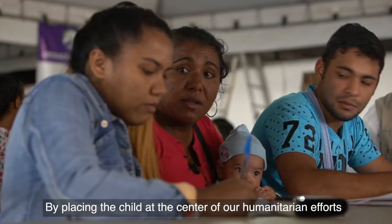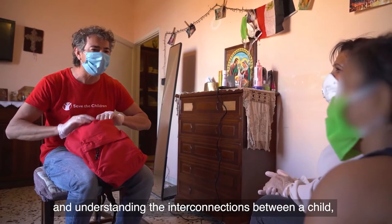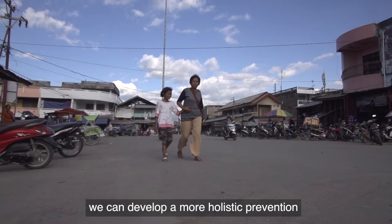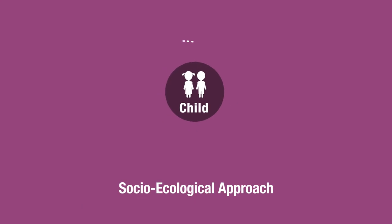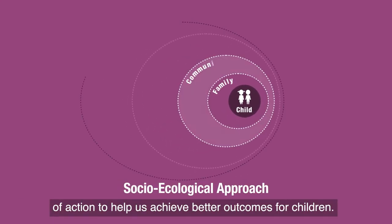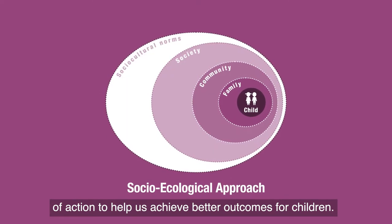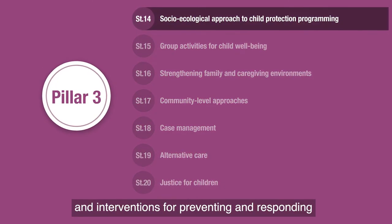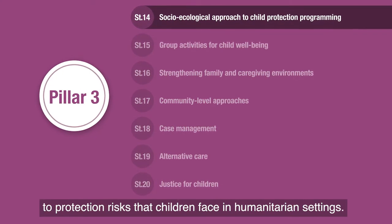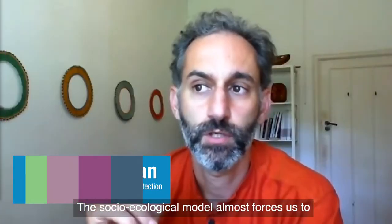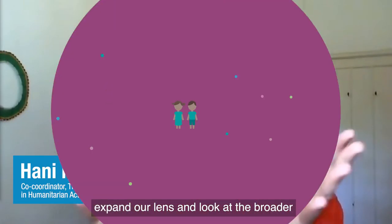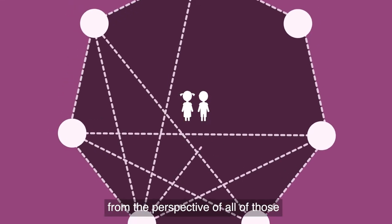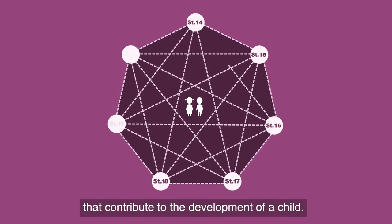By placing the child at the centre of all humanitarian efforts and understanding the interconnections between a child, their family, community and society, we can develop a more holistic prevention and response approach to child protection. The social ecological approach to programming provides a framework of action to help us achieve better outcomes for children. It lies at the heart of CPMS Pillar 3. The ecological model almost forces us to expand our lens and look at the broader, holistic development of a child from the perspective of all those who contribute to that development.